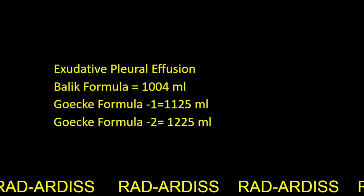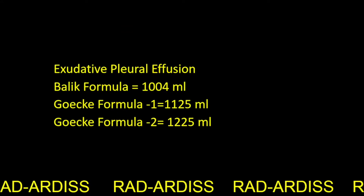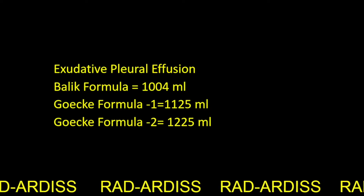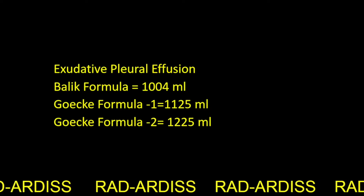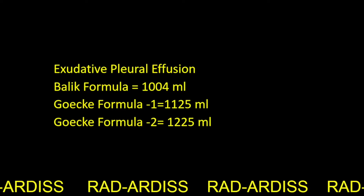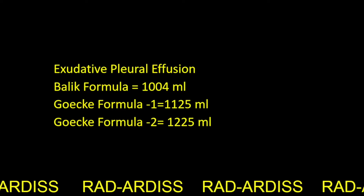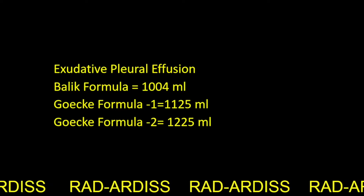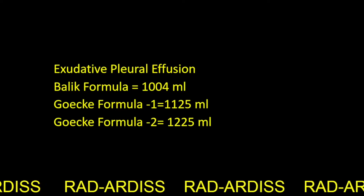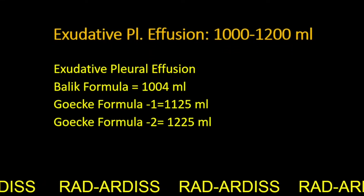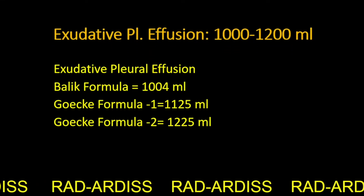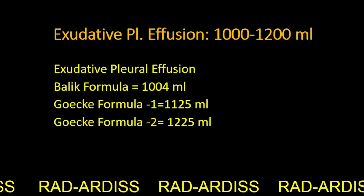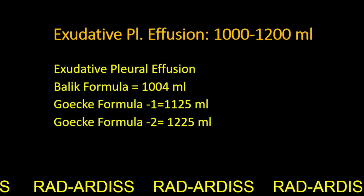In summary, our patient is having an exudative pleural effusion. According to the Balik formula, the amount of effusion is 1004 ml. According to Goiki formula number 1, it is 1125 ml. And according to Goiki formula number 2, it is 1225 ml. Therefore, our patient is having exudative pleural effusion with a volume of about 1000 to 1200 ml. Thank you.